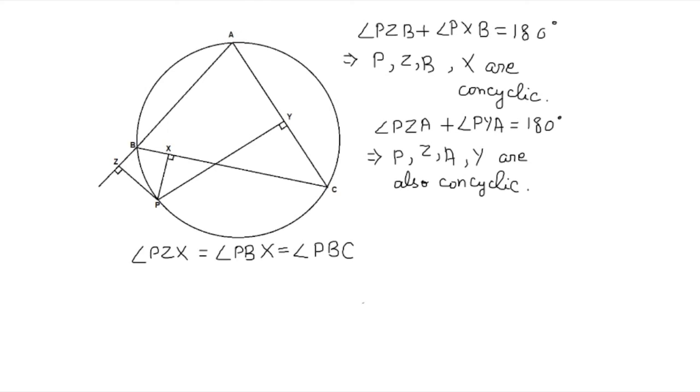Again, this PBC, finally, as is visible, P, B, A, and C are also concyclic points. They are on the same circle. So angle PBC would again equal angle PAC. So we leave it at that.